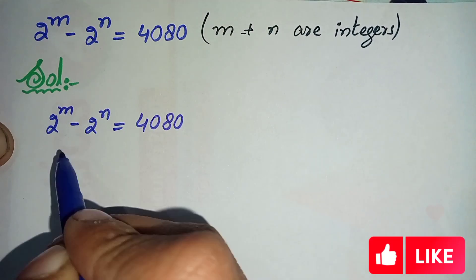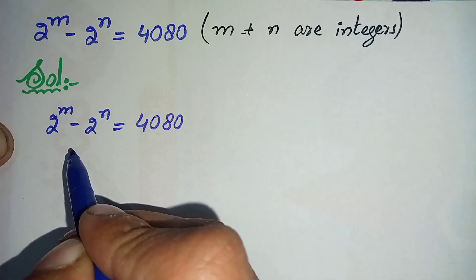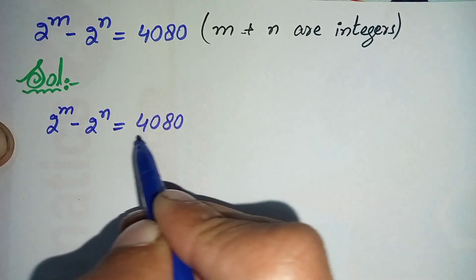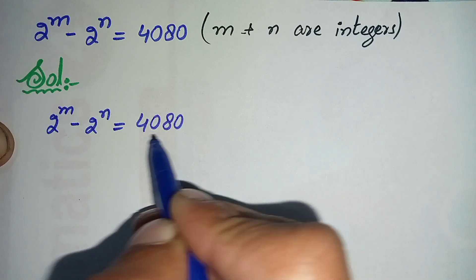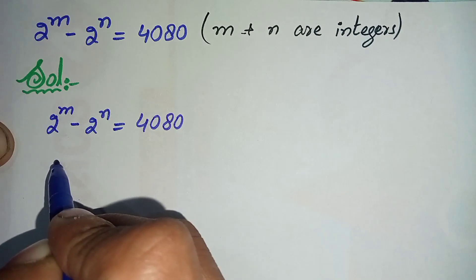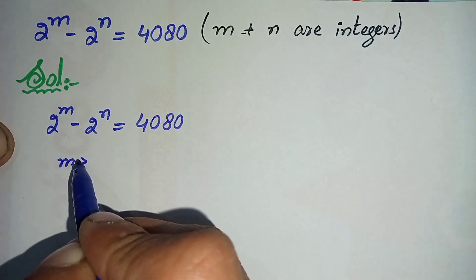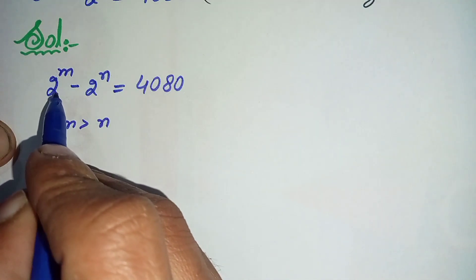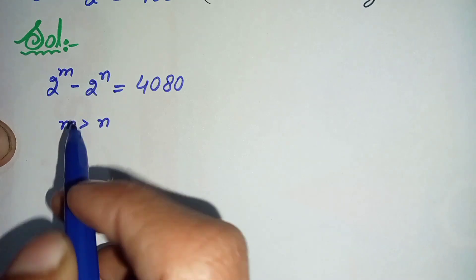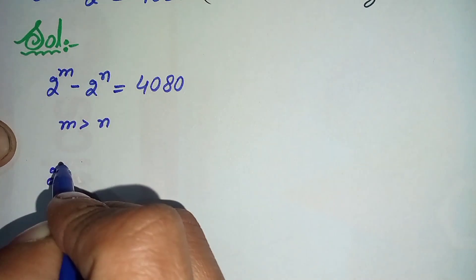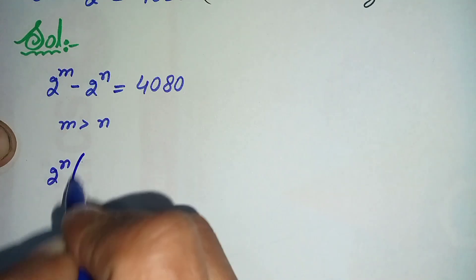First of all, I will show you an interesting point: the difference of these two numbers is a positive number, and the bases of both numbers are the same, so m must be greater than n. Now let us factorize this side. We will take 2 raised to power n as a common factor, so we can rewrite the equation by taking 2 raised to power n common.